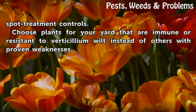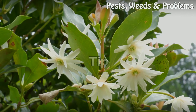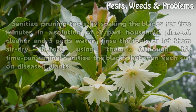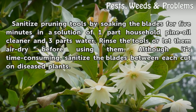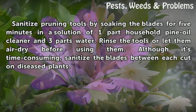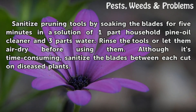Choose plants for your yard that are immune or resistant to verticillium wilt instead of others with proven weaknesses. Tip: Sanitize pruning tools by soaking the blades for five minutes in a solution of one part household pine oil cleaner in three parts water. Rinse the tools or let them air dry before using them. Although it's time-consuming, sanitize the blades between each cut on diseased plants.